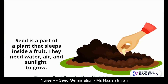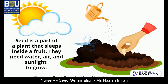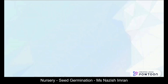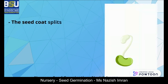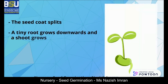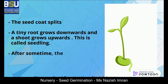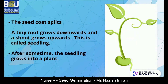A seed is a part of a plant that sleeps inside a fruit. Seeds need water, air, and sunlight to grow. Germination occurs in the following steps: the seed coat splits, a tiny root grows downwards, and the shoot grows upwards.